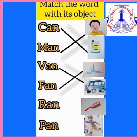Very good. The next word is R, A, N — ran. Children, can you see a boy running in the last picture? Yes, that is ran. Let us match the ran word with the ran picture. Yes, correct.